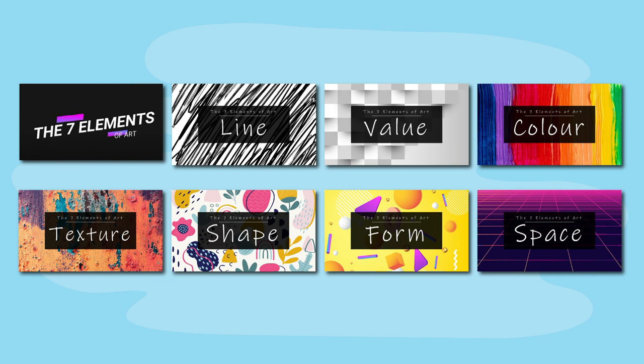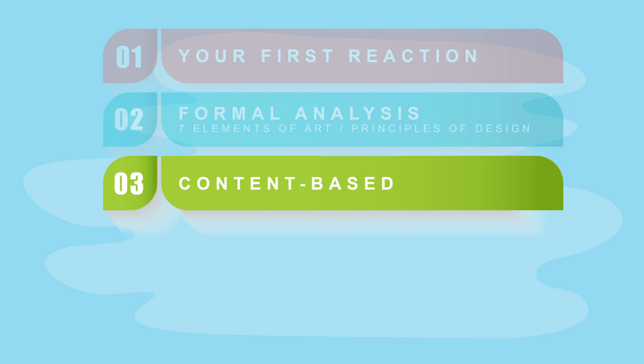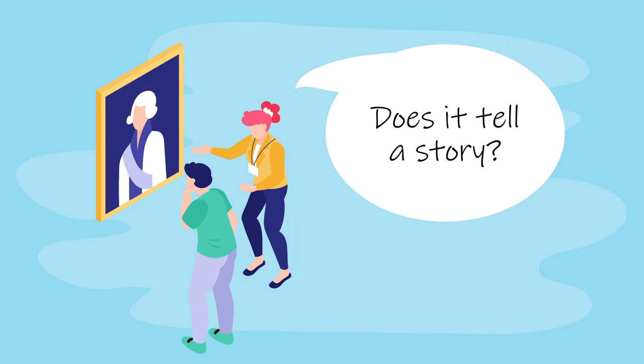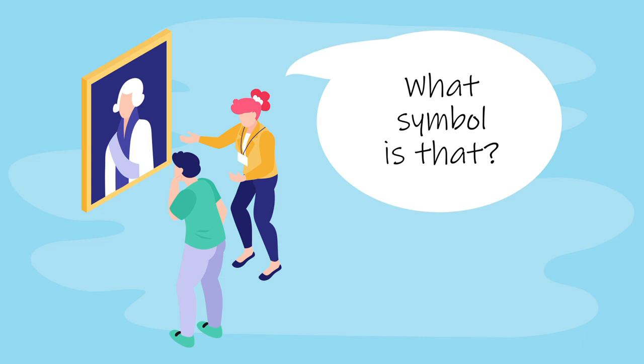Now we delve deeper into levels three and four. Level three is the content-based analysis, and for this we need to be investigators — we need to start doing research. What are you actually looking at? Does it tell a story? What is the story? Who are the characters represented in the artwork? Are they using any specific symbols?